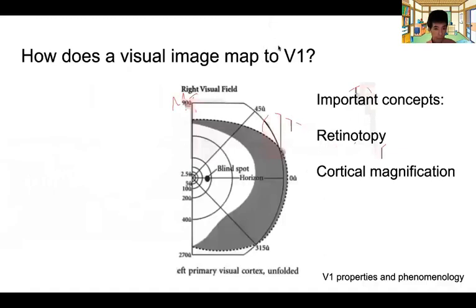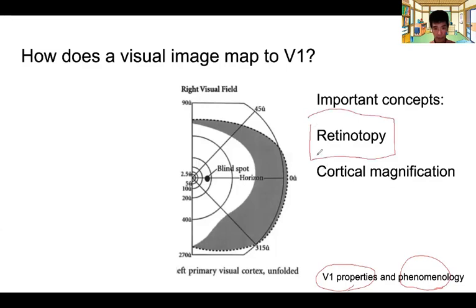So that's the three important features of V1: layer structure, more complex receptive field type, and columnar structure. Another important property of transformation from LGN to V1 concerns how does the visual image map onto V1. This becomes very important when we consider the phenomenology and property of V1. In an upshot, I will introduce this concept of retinotopy and cortical magnification.